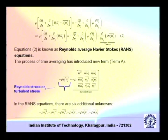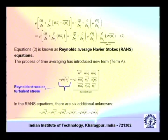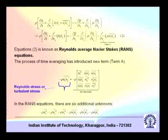The Reynolds stress tensor is a second-order tensor requiring two indices. It has 9 components, of which 6 are independent because the tensor is symmetric — u_i-prime u_j-prime equals u_j-prime u_i-prime, so i and j can be swapped. Thus, in the Reynolds Averaged Navier-Stokes equation, there are 6 additional unknowns introduced by the Reynolds stress.